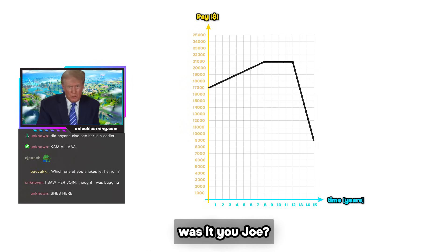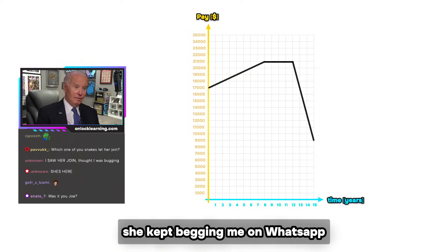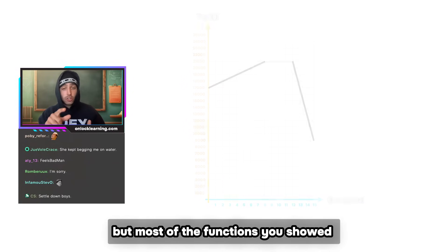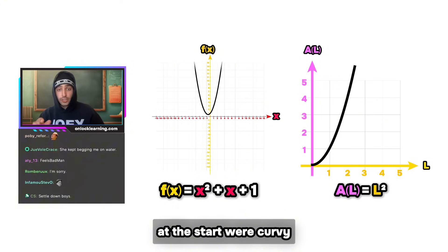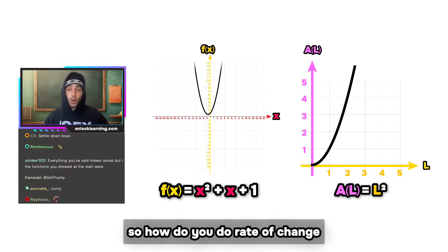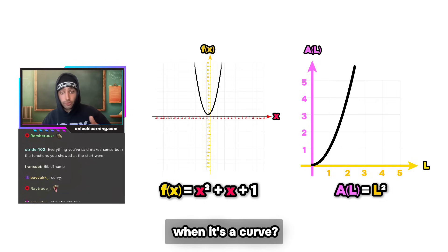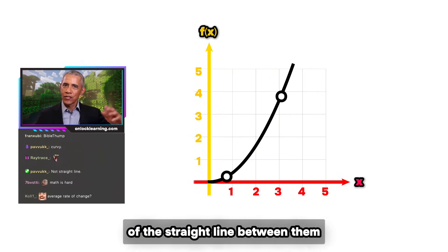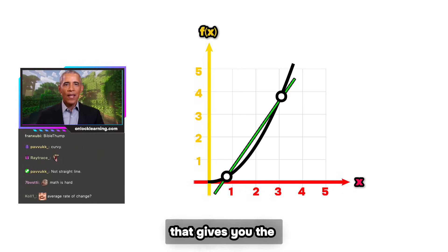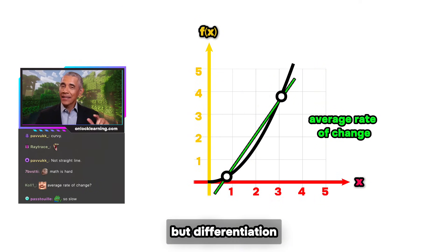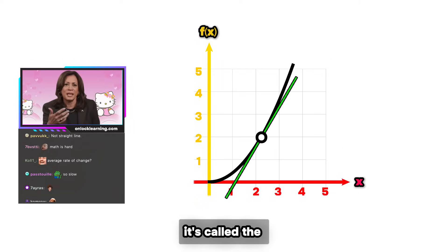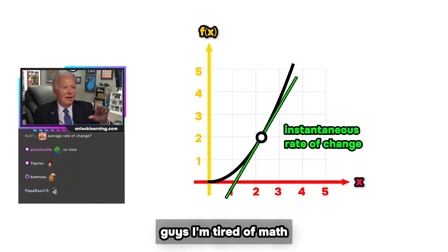Voices, guys, everything you've said makes sense, but most of the functions you showed at the start were curvy, not straight lines. Good observation. So how do you do rate of change when it's a curve? So this is why differentiation is goated. If you pick two points on a curve and find the rate of change of the straight line between them, that gives you the average rate of change. But differentiation lets us find the rate of change at a single point. Okay. There's actually a name for that, it's called the instantaneous rate of change.